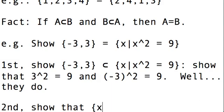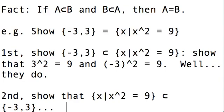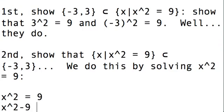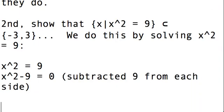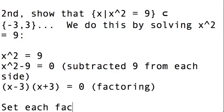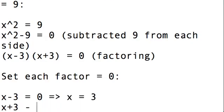Second, we want to show that {X | X² = 9} is a subset of {-3, 3}. Well, how do we do that? We do this by solving X squared is equal to 9. So if X² = 9, then X² - 9 = 0. And then if I factor, I get (X - 3)(X + 3) = 0, which is factoring the difference of squares. And so then we can set each factor equal to 0. We get X - 3 = 0, which implies that X = 3, or X + 3 = 0, which implies that X = -3.